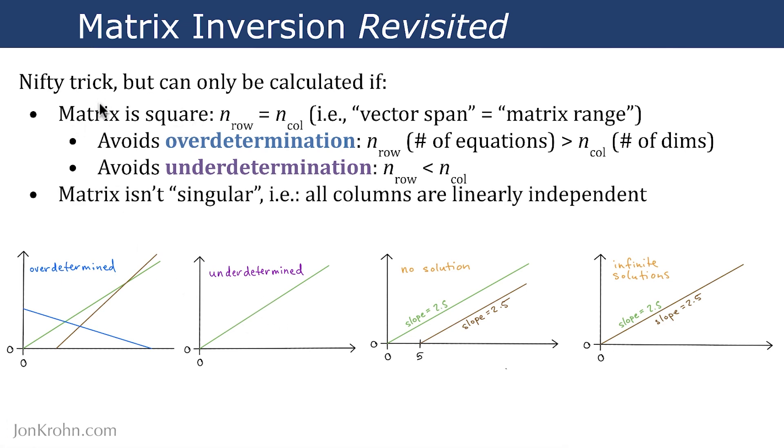In addition to matrix inversion only being possible if the matrix is square, matrix inversion is also only possible if the matrix isn't singular. So, all of the columns in the matrix must be linearly independent. You can't have a situation where if one of the columns is [1, 2], then another one can't be [2, 4], which would indicate parallel lines. In that situation, there's no point where the lines cross over to solve for.